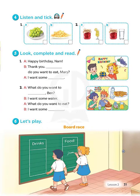Page 31, Lesson 2, Activity 4. Listen and tick. One. Would you like some chips? No thanks. What do you want to eat? I want some grapes. Two. What do you want to eat? I want some jam. What do you want to drink? I want some lemonade. What do you want to drink?